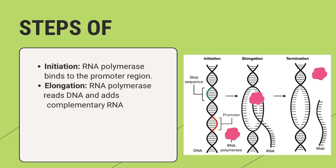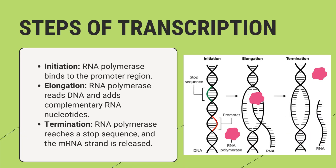Let's break down the steps of transcription. Initiation begins when RNA polymerase binds to the promoter region of the DNA. During elongation, RNA polymerase moves along the DNA strand, adding complementary RNA nucleotides. Finally, termination occurs when RNA polymerase reaches a stop sequence, releasing the newly formed mRNA strand. This mRNA will then move from the nucleus to the cytoplasm for translation.